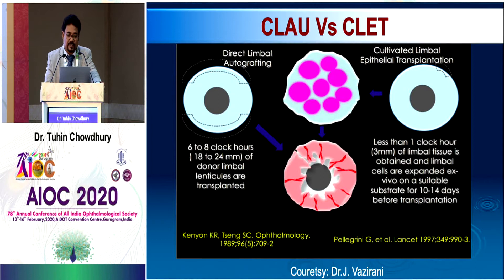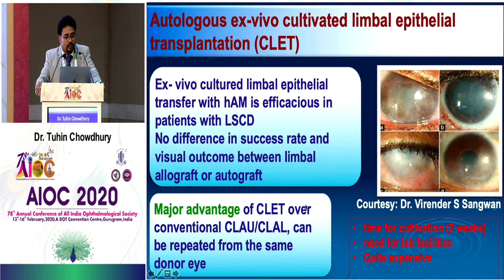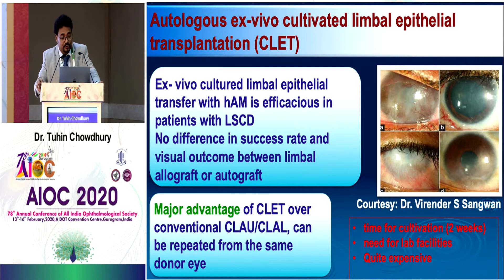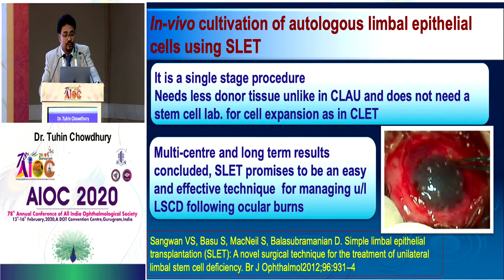To avoid iatrogenic LSCD, Pellegrini et al. first described cultivated limbal epithelial transplantation (CLET), where they take less than one clock hour of limbal tissue, expand it in a stem cell laboratory over a substrate such as fibrin glue or amniotic membrane, and after two weeks transplant it over the diseased surface. Autologous ex vivo cultivated limbal epithelial transplantation — SLATE — is predictable and more conventional than CLAU, but it cannot be performed everywhere due to biological laboratory requirements. The cultivation time is two weeks and it is expensive — a stem cell laboratory costs approximately 1.5 lakh rupees.